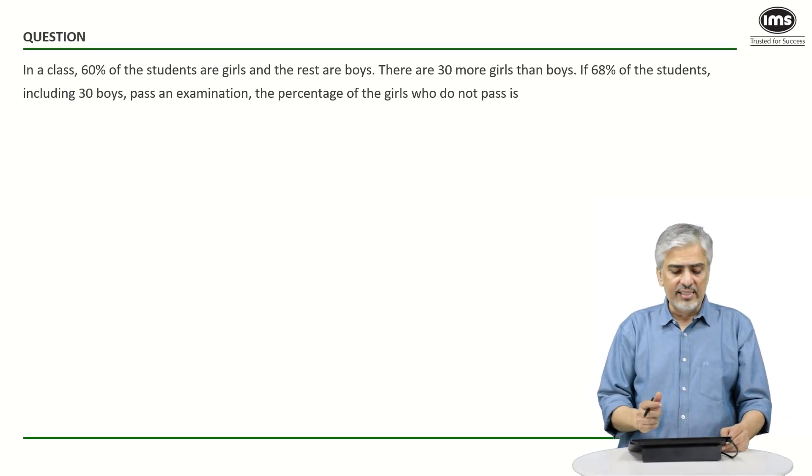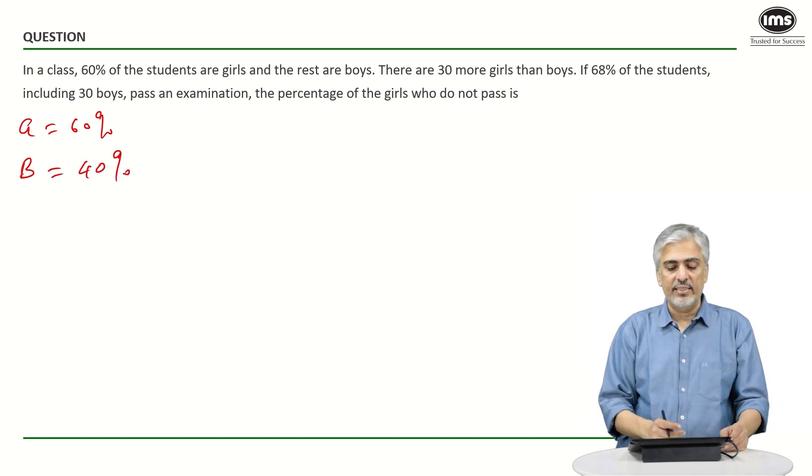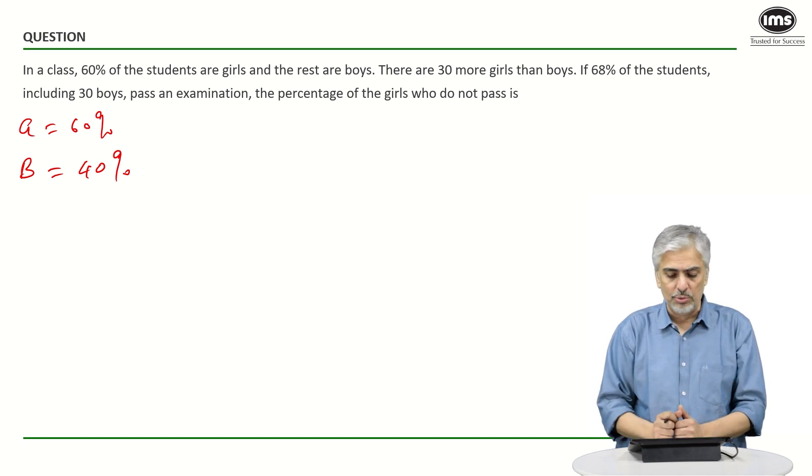In a class, 60% of the students are girls and the rest are boys. So girls are 60%, boys are automatically 40%. There are 30 more girls than boys, so the difference is 30.